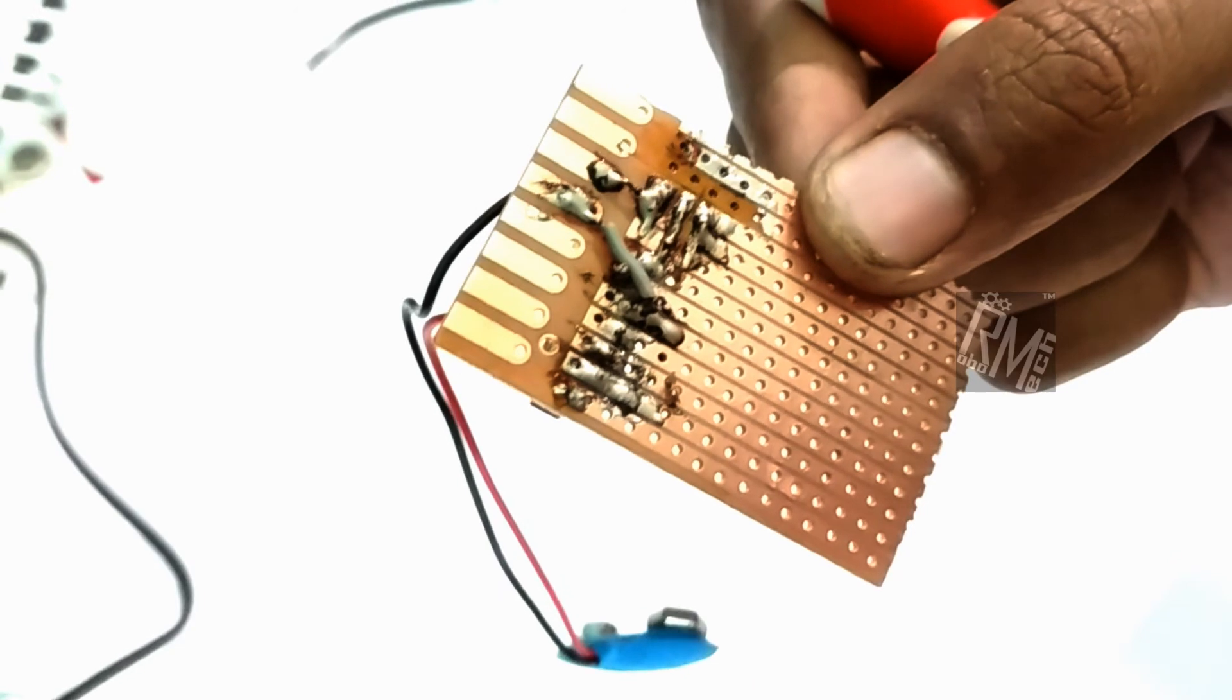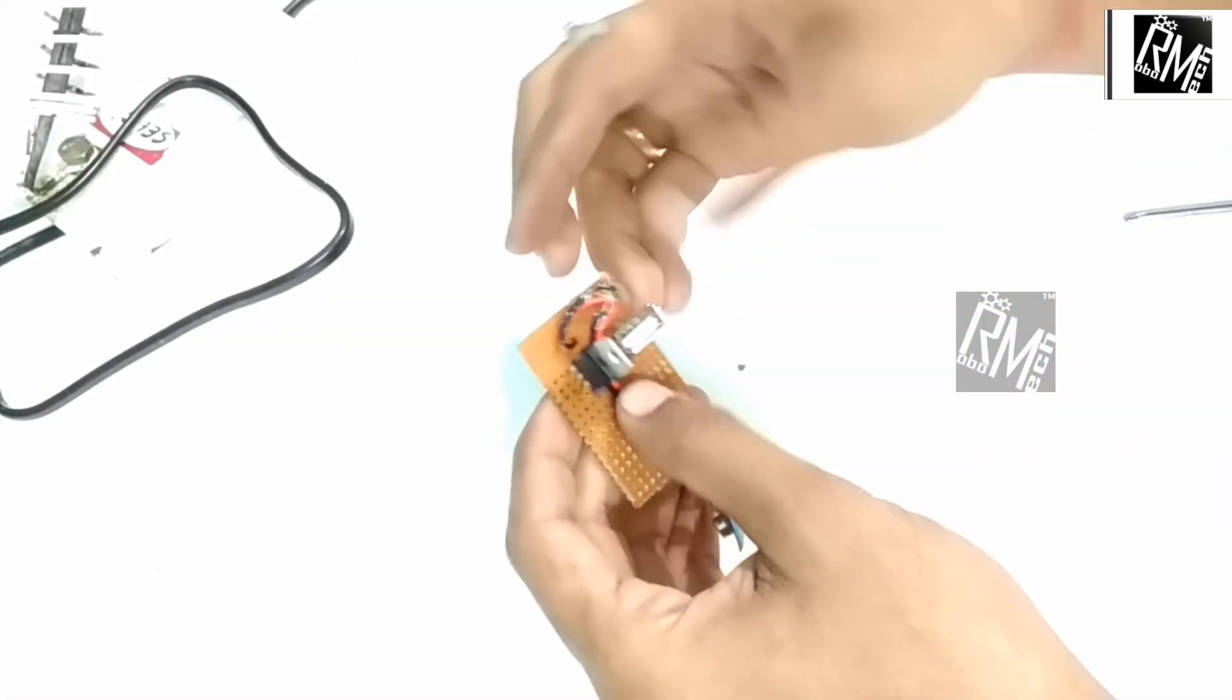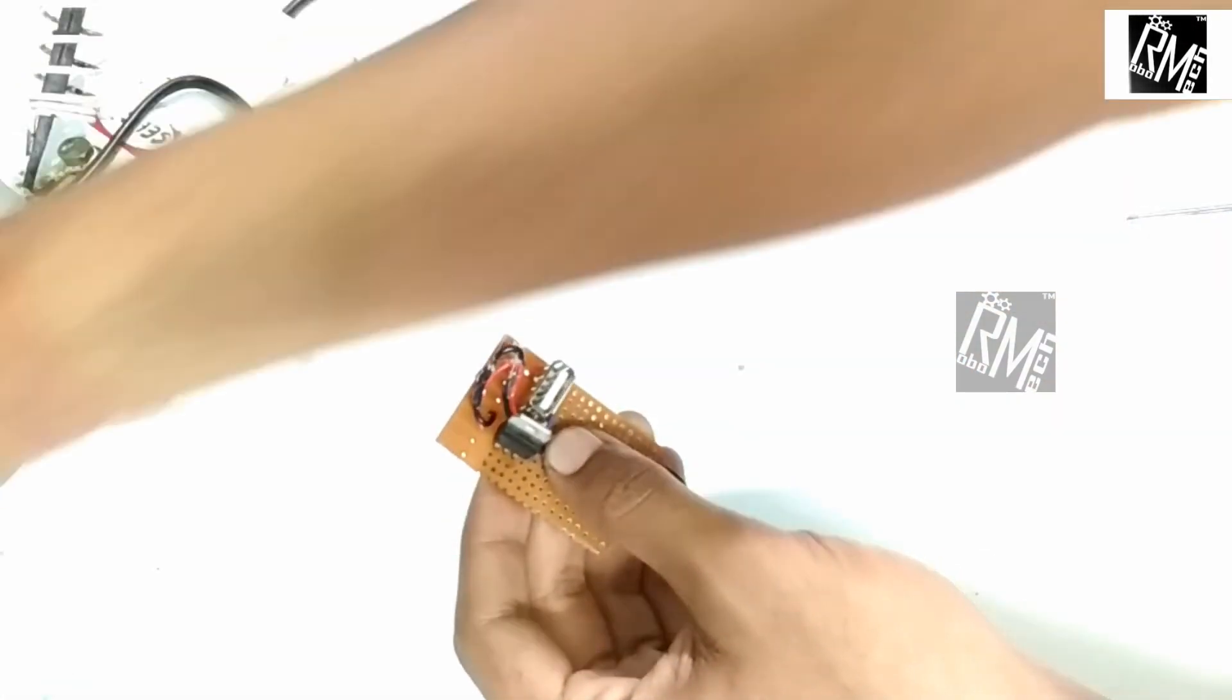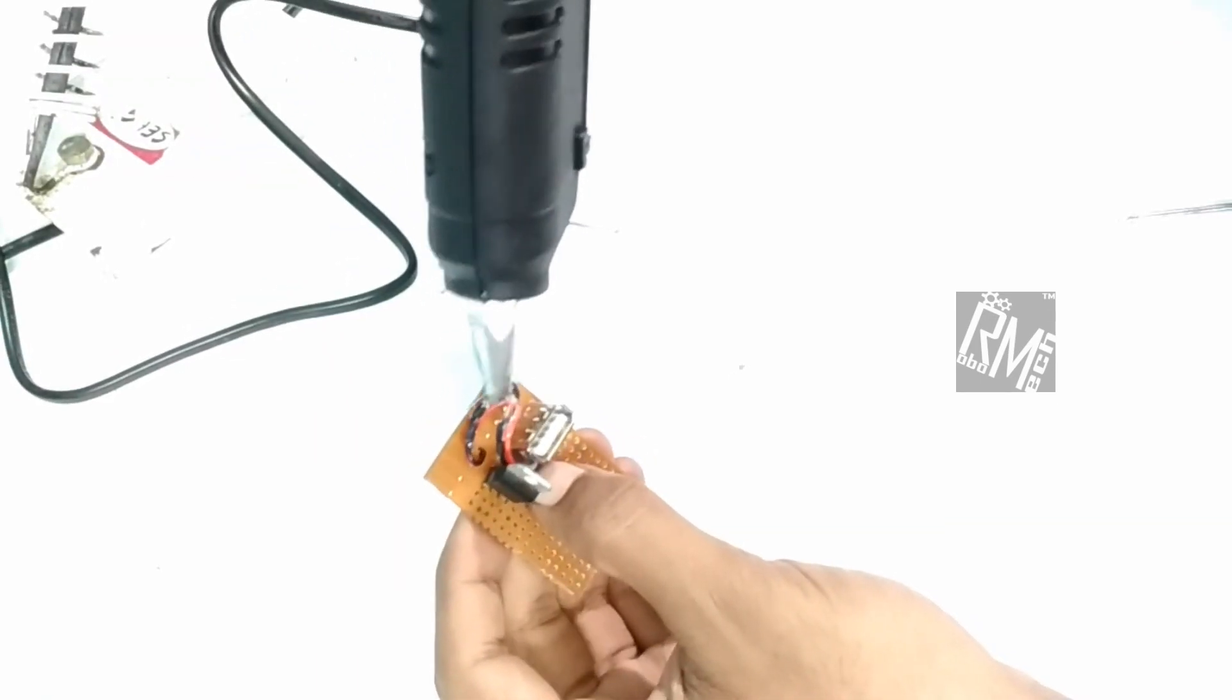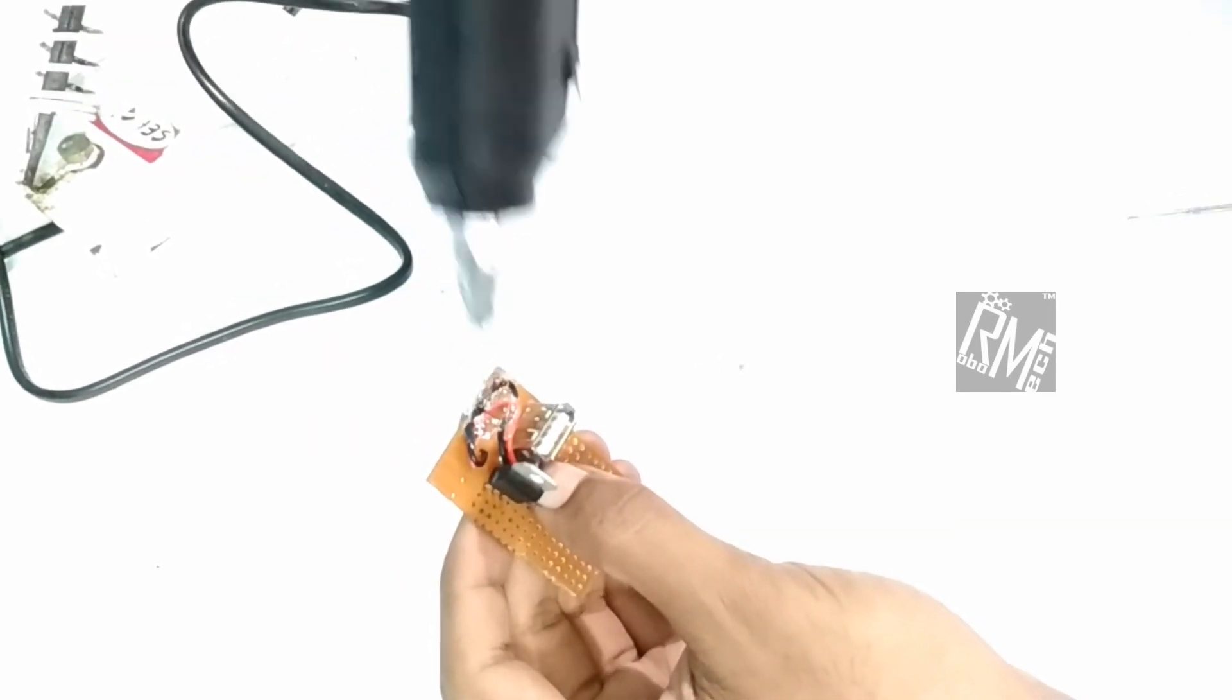We are done, and now we just need to manage these messy wires. I am using hot glue to stick to the surface of the board. Anyway, this is not a mandatory step.